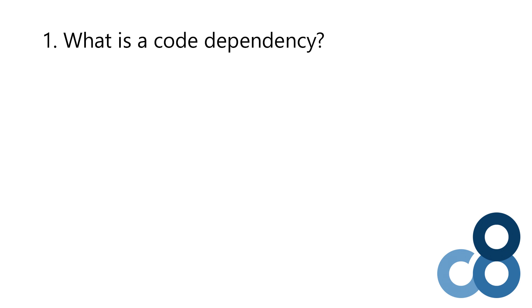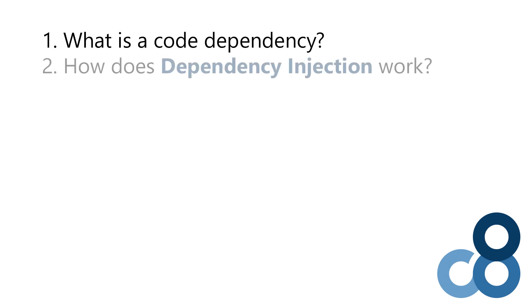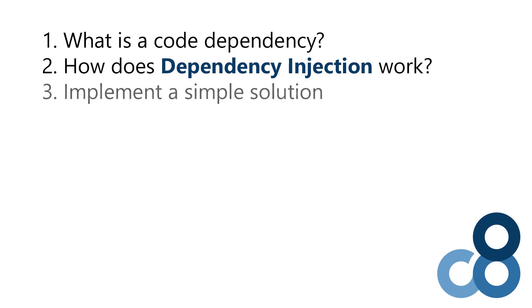To make things simple, we first take a look at what a code dependency is. Next, I want to make sure that you understand how dependency injection works and why applying it can improve your code. In the last part of this video, we are going to implement a simple solution from scratch without using any framework, so that you can understand and implement this example step-by-step on your own. And now let's jump right into it.